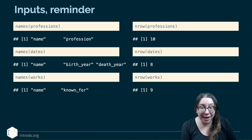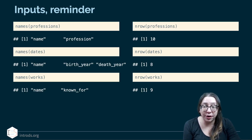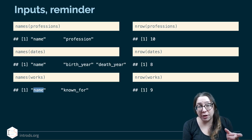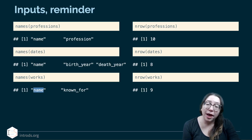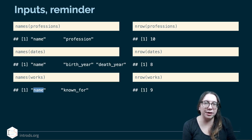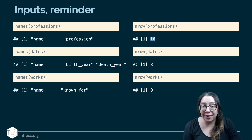All three data frames share one variable in common: a column called name, which we'll use as the linking variable when we join them. They also carry additional information we can bring in. The data frames don't all have the same number of rows, but we know the professions data frame has the complete information while the others are missing some scientists.